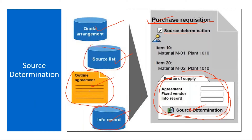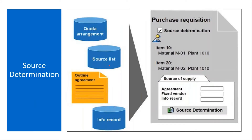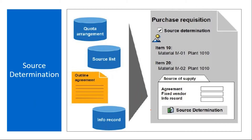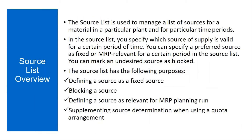Today we will see the source list, and in tomorrow's class we will cover quota arrangement. Basically, when you do the source determination, the purchase requisition system will try to read one of all these documents. From there, it will select and propose a source — a vendor — here in the purchase requisition. So first, we will start with the source list.